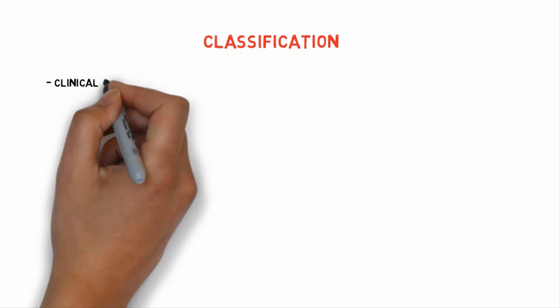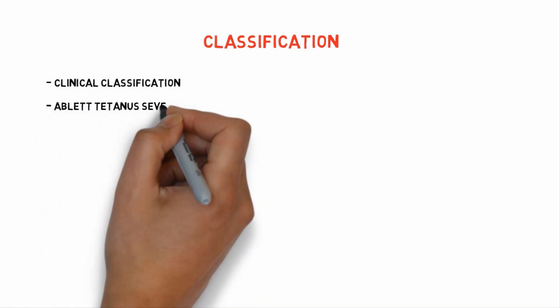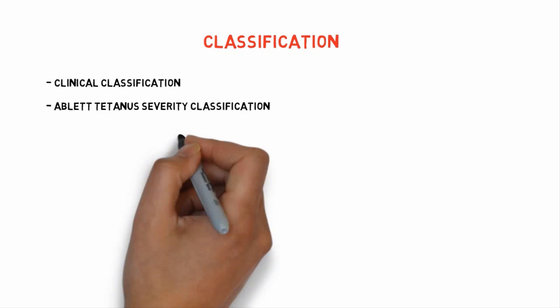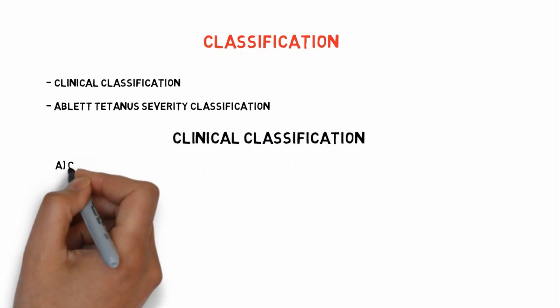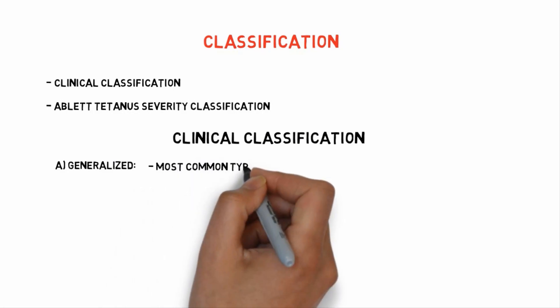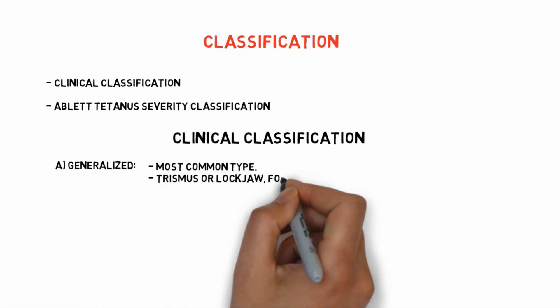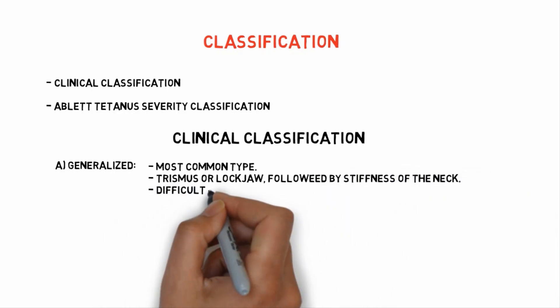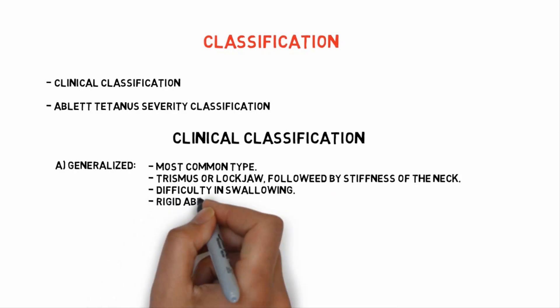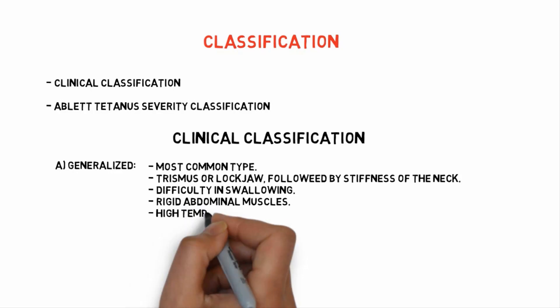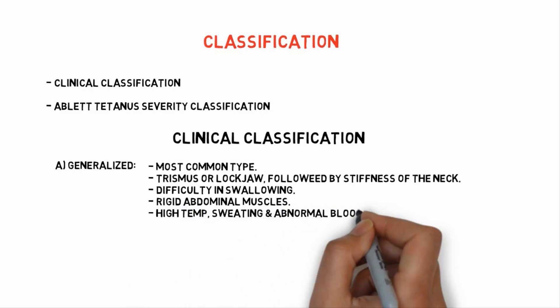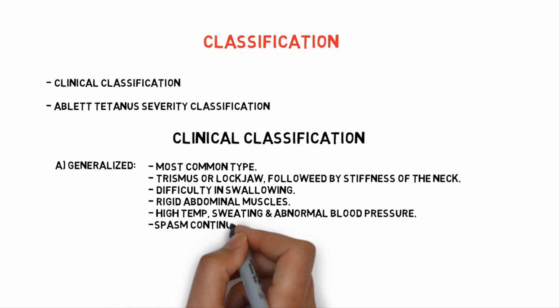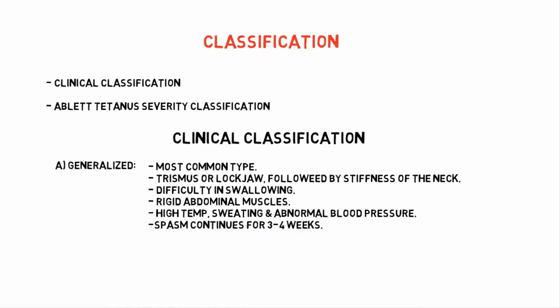Coming to the classification of tetanus, there are two types. The first is clinical classification, and the second is the ablate tetanus severity classification. Under clinical classification, the first type is generalized, which is the most common. There is trismus or lockjaw, followed by stiffness of neck muscles, difficulty in swallowing, rigid abdominal muscles, high temperature, sweating, and abnormal blood pressure. Spasms continue for 3 to 4 weeks.